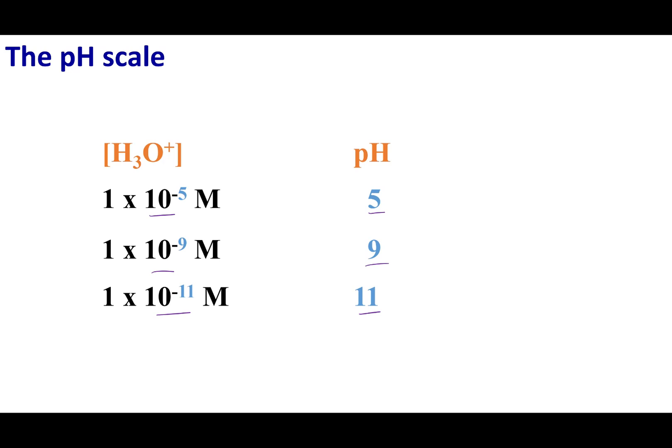And now you guys can see why we use the pH scale. This is a difference of 10,000 or 4 pH units. This is a difference of 100, which is 2 pH units.